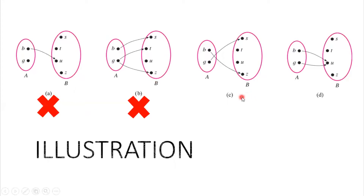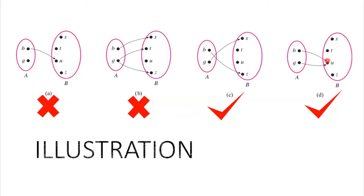How about this one — is it a function or not? If your answer is a function, then you are correct. It's a function. By definition, every element in set A has exactly one element in set B. How about letter D? Yes, it is still a function because it does not violate the definition of a function. Every element in set A has exactly one element in set B. For example, point g has one corresponding value, which is u.